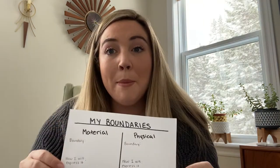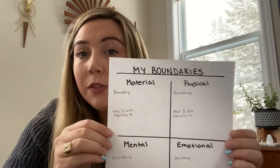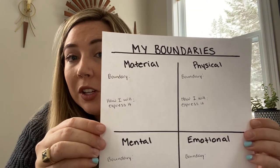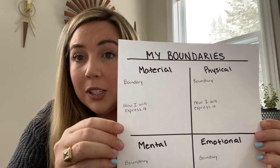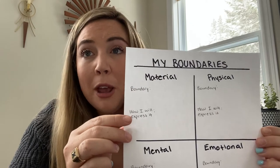Now that we were able to work through some scenarios about boundary setting together, it's time for your turn to work on some scenarios using your My Boundaries activity sheet. On this activity sheet, there's a space for you to write about your material, physical, mental, and emotional boundaries. You will list the boundary you have chosen to work through and then how you will choose to express the boundary if someone breaks or violates it. One important takeaway from this activity is that boundaries are personal — although you may not share the same boundaries as someone else, you always have to remember to respect other people's boundaries.